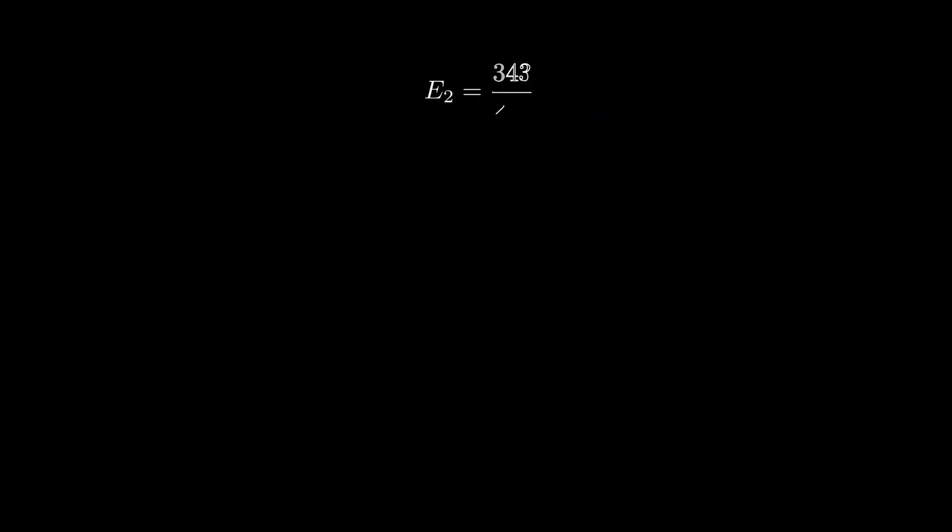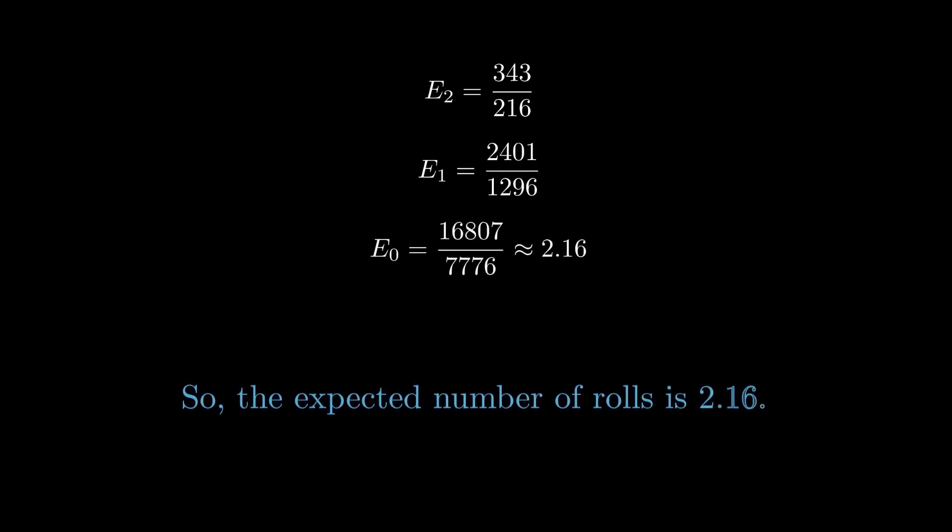Similarly, we can calculate E2, E1, and finally E0. So the expected number of rolls is 2.16.